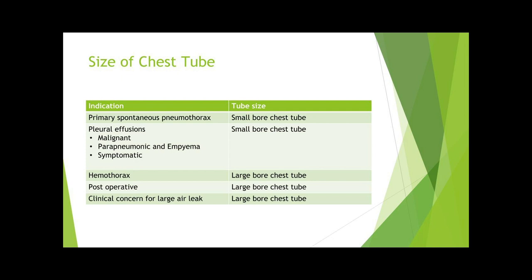For a primary spontaneous pneumothorax, a small bore catheter should be adequate. However, if a larger air leak is anticipated, such as in a secondary spontaneous pneumothorax, a larger chest tube may be needed. For a hemothorax, large bore chest tubes should be used as blood will easily clot in a small bore tube. The British Thoracic Society's guidelines suggest that for a malignant or infectious effusion, including empyemas, small bore chest tubes are usually adequate, though some empyemas may be very gelatinous and therefore larger tubes will be needed. Remember that when a small bore chest tube is used, it is more likely to become blocked and stop draining depending on the type of material traversing through.